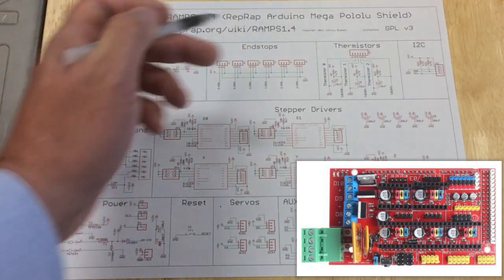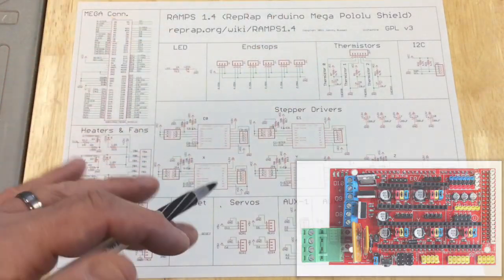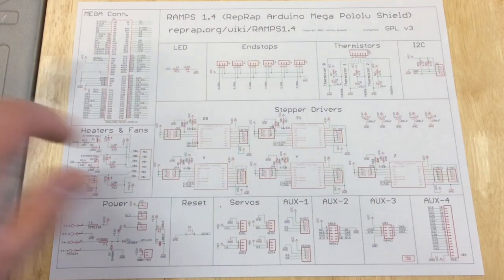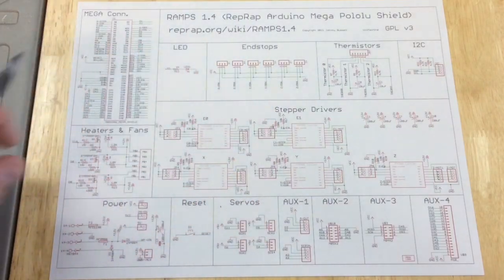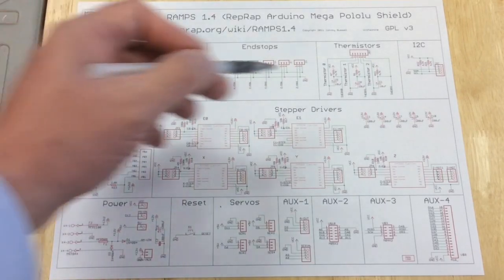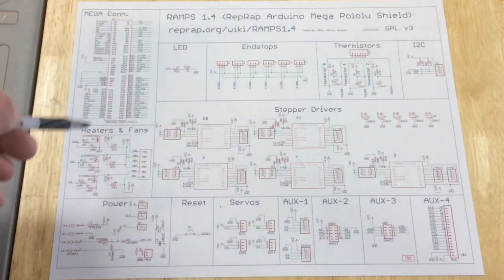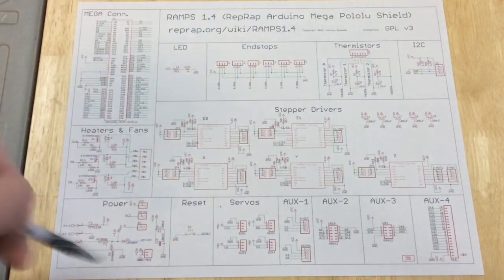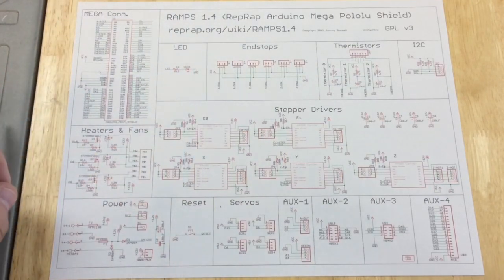This is the shield that plugs into the Arduino Mega and controls most of our 3D printers. Sometimes this is built into the board with the Arduino, and sometimes it's a separate shield. But the schematic is basically the same. And we've got the thermistors, end stops, heater, stepper drivers, power. And this power is the area I want to focus on.